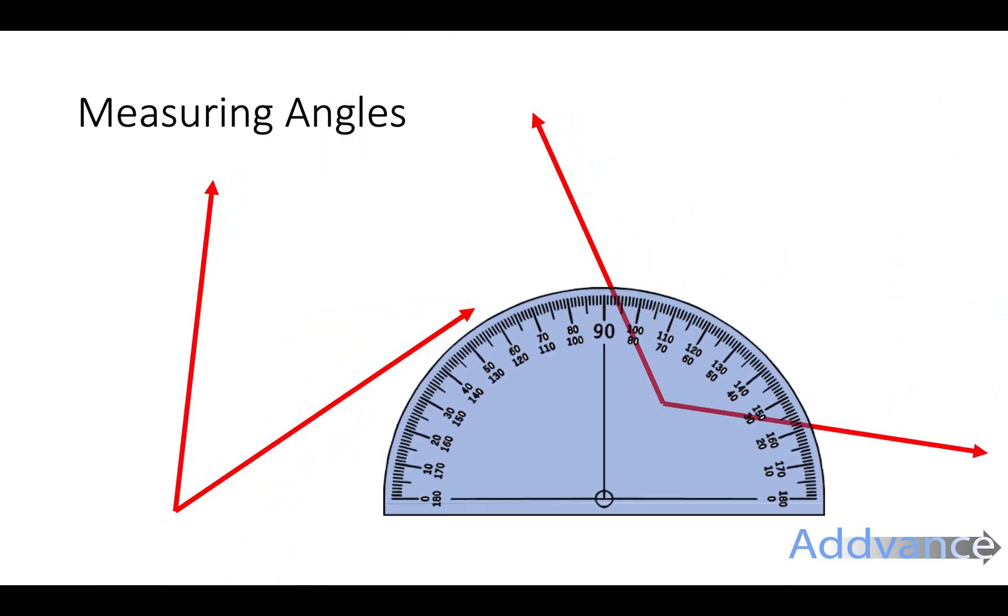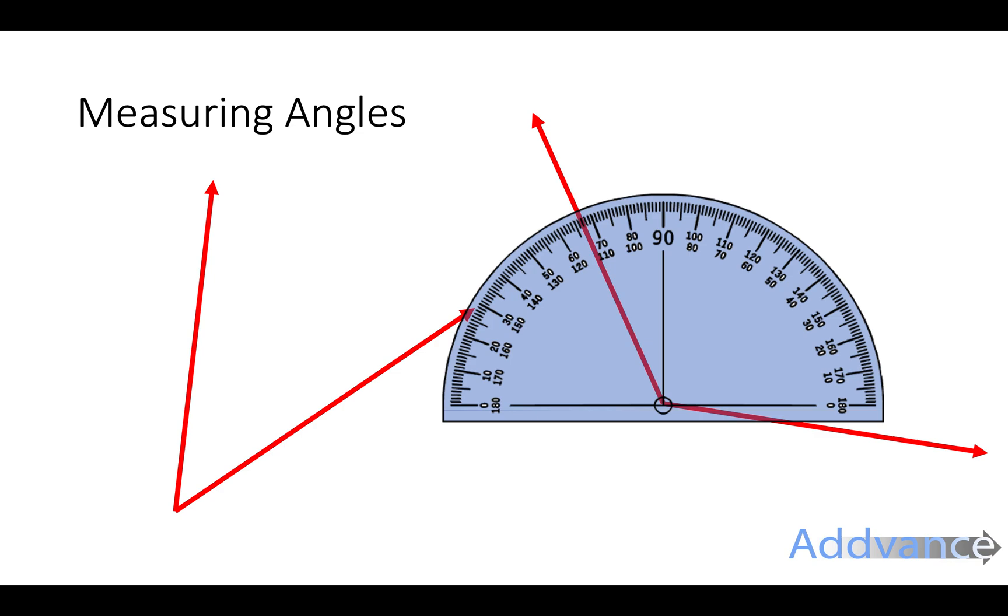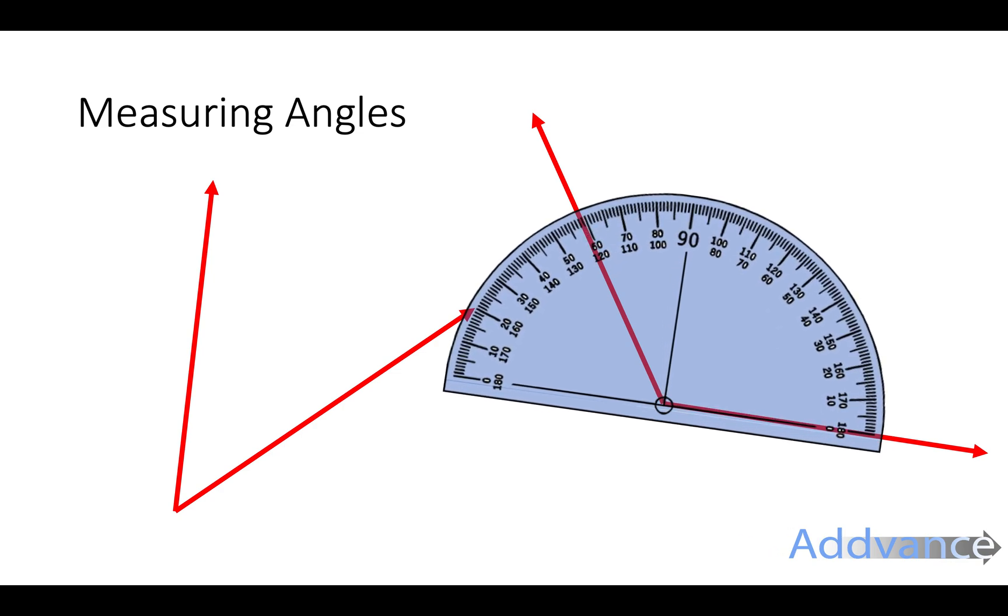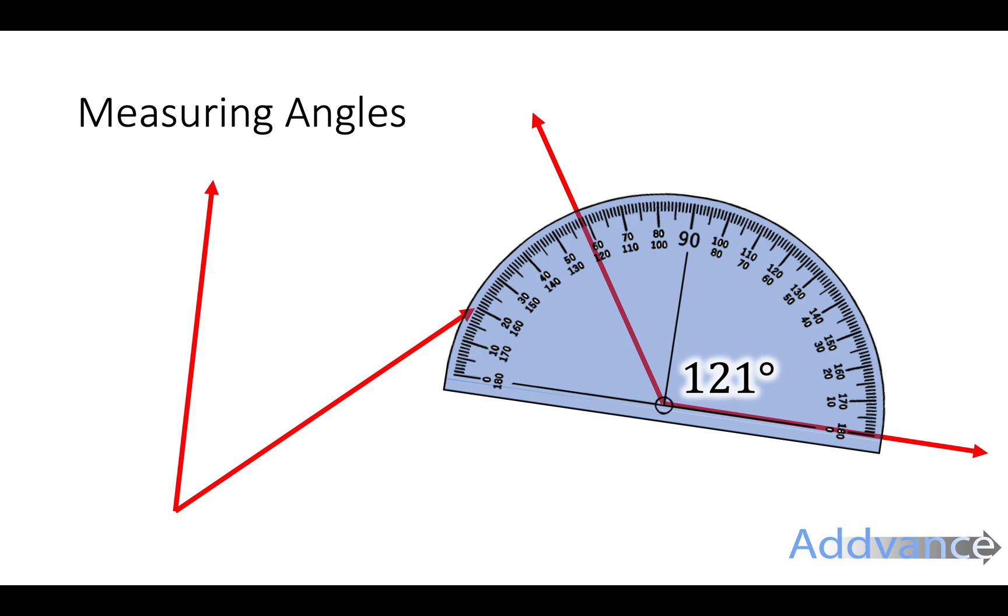With this other angle we've got the bullseye lined over. Rotate so the zero line is over the line and you count, you measure it, it is 121 degrees.